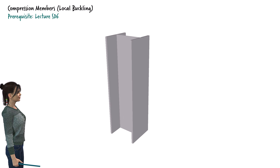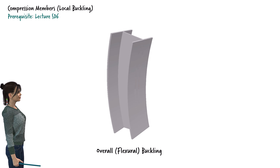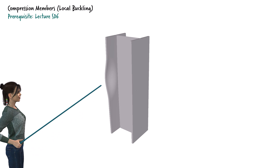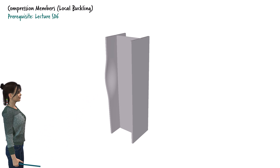When all the elements in a compression member buckle in unison, we refer to it as overall buckling — a type discussed in previous lectures. For example, the overall buckling of a column having a wide flange section looks like this. Buckling could also happen locally in only one of the elements of the cross-section. In this case, only one of the flanges of the column has buckled. We refer to this phenomenon as local buckling.